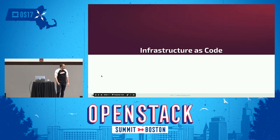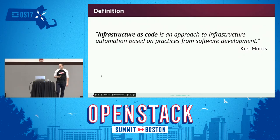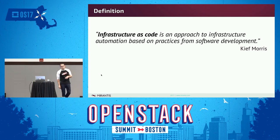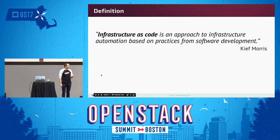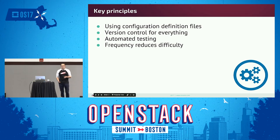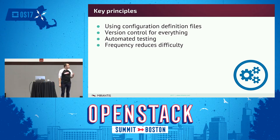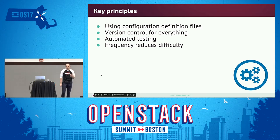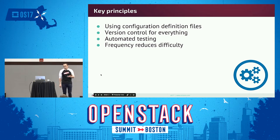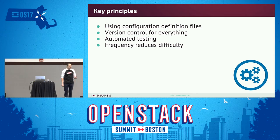So what is infrastructure as code? I like the definition from Keith Morris, who's the author of the great book with the same name. He states that it is an approach to infrastructure automation based on practices from software development. You can manage your infrastructure the same way you manage your software projects. The key principles are using configuration definition files where you declaratively describe how your infrastructure should look — things like VMs, images, networks, volumes, etc. Version control should be the source of truth for everything — it makes it easy to track changes, easy to collaborate, easy to roll back.